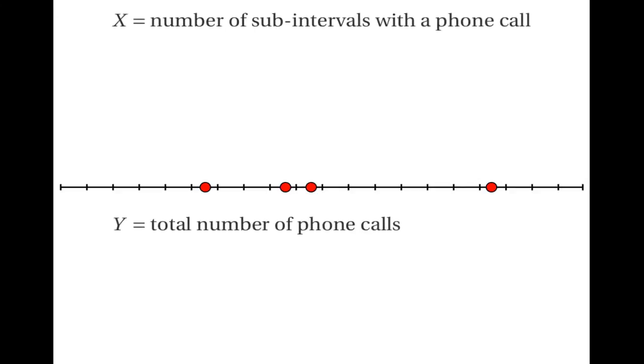Now we can try to get around this problem by increasing the number of intervals. Suppose I divide each of these intervals in half so that there are 20 sub-intervals. Now x and y are the same again — both are 4, because there are 4 sub-intervals with a phone call and the total number of phone calls is 4.